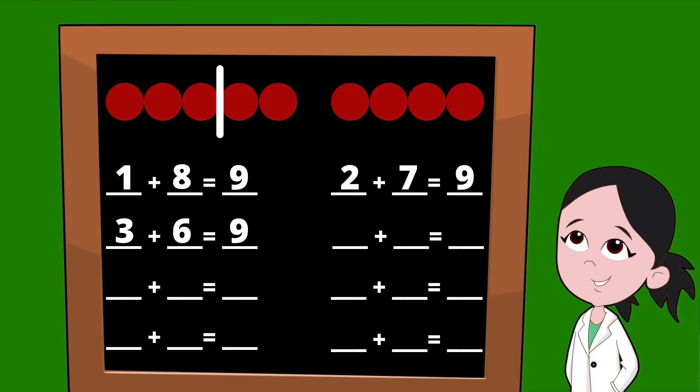Let's go ahead and slide that line over to get our next set of partners. To the left of our line, we now have four dots, so our first partner is the number four. To the right of our line, we now have five dots, so our second partner is the number five. Let's check it: four plus five — yes, that equals nine. That's our fourth set of partners.